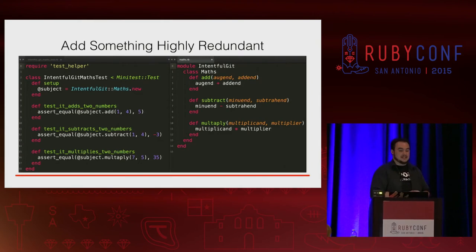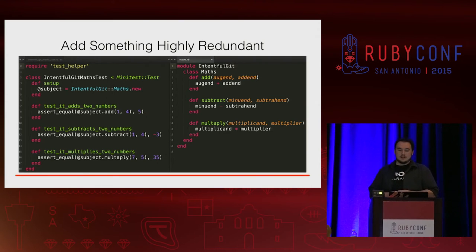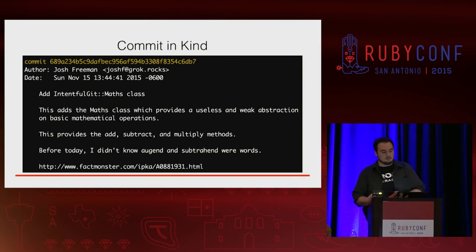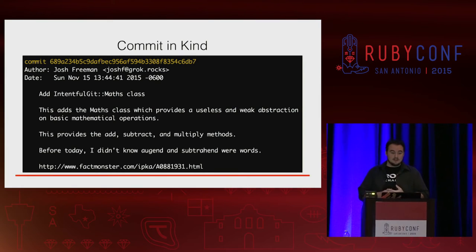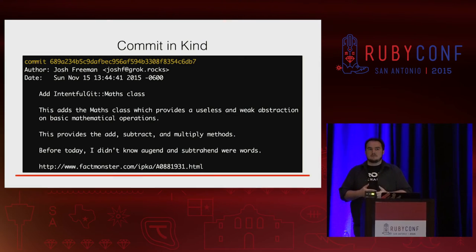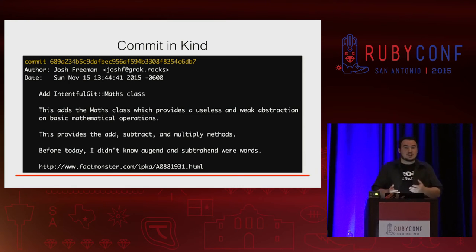Now we're going to build something that's highly redundant and useless — intentionally incomplete and incorrect. We're building an abstraction on basic math functions. We've got some tests and some functionality that we've added. Before I built this example, I didn't even know that minuend and subtrahend were words. Putting that information in the commit message might explain it. If you have details like this, I don't think they need to be comments — add this information into your commit message instead.